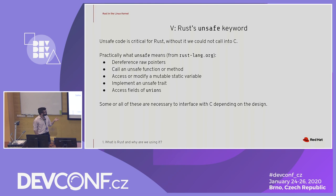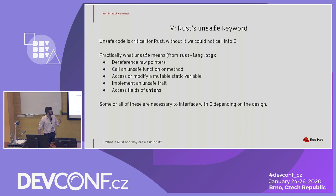The Rust unsafe keyword allows us to do a few things: dereference raw pointers, call code that has been marked as unsafe, and access or modify mutable static variables. These kinds of operations are often needed when doing some sort of FFI, so this unsafe keyword is really crucial for building C into the actual nuts and bolts of the language.